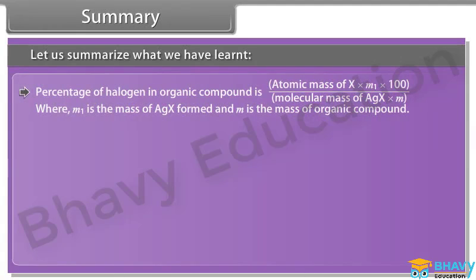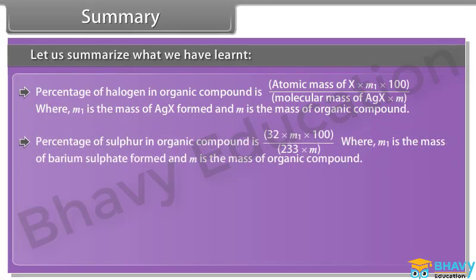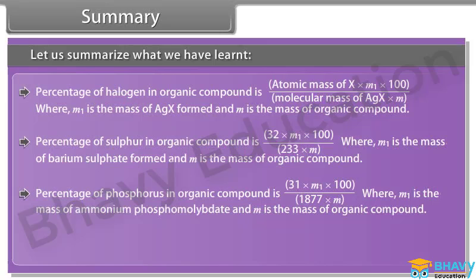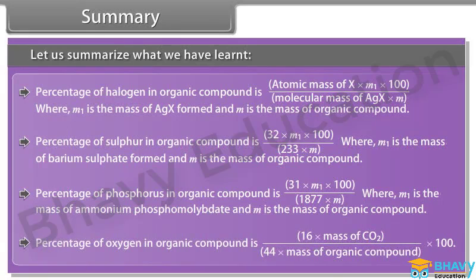Percentage of halogen in organic compound = atomic mass of X × M₁ × 100 ÷ (molecular mass of AgX × M), where M₁ is the mass of AgX formed and M is the mass of organic compound. Percentage of sulfur = 32 × M₁ × 100 ÷ (233 × M), where M₁ is the mass of barium sulphate. Percentage of phosphorus = 31 × M₁ × 100 ÷ (1877 × M), where M₁ is the mass of ammonium phosphomolybdate. Percentage of oxygen = 16 × mass of CO₂ ÷ (44 × mass of organic compound) × 100.